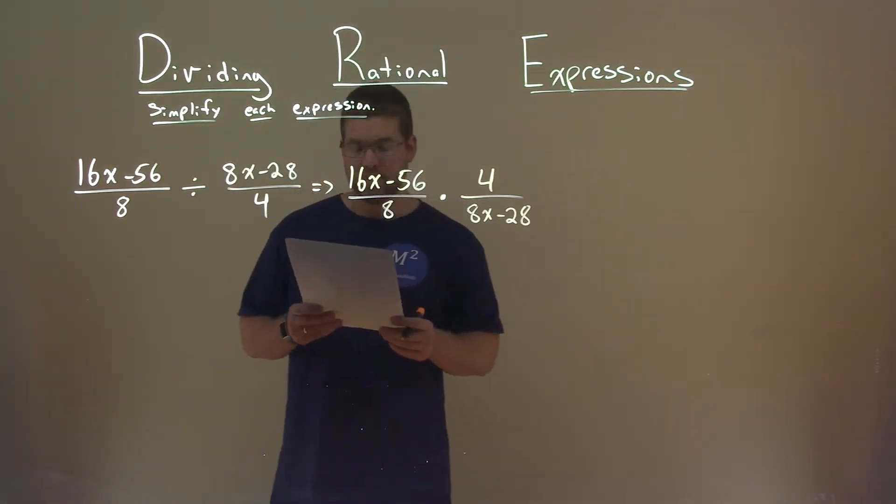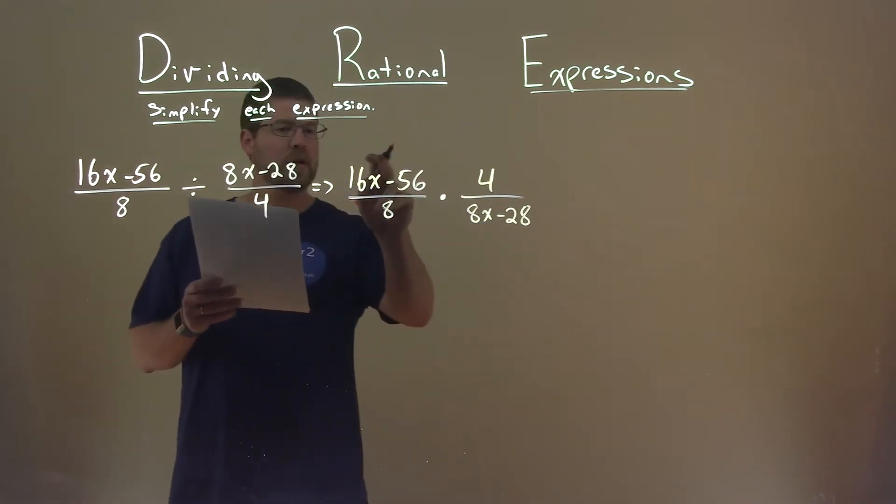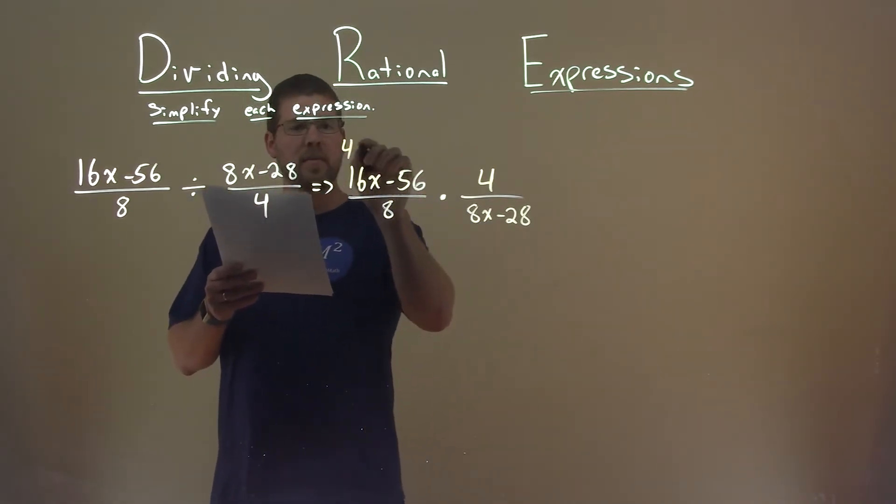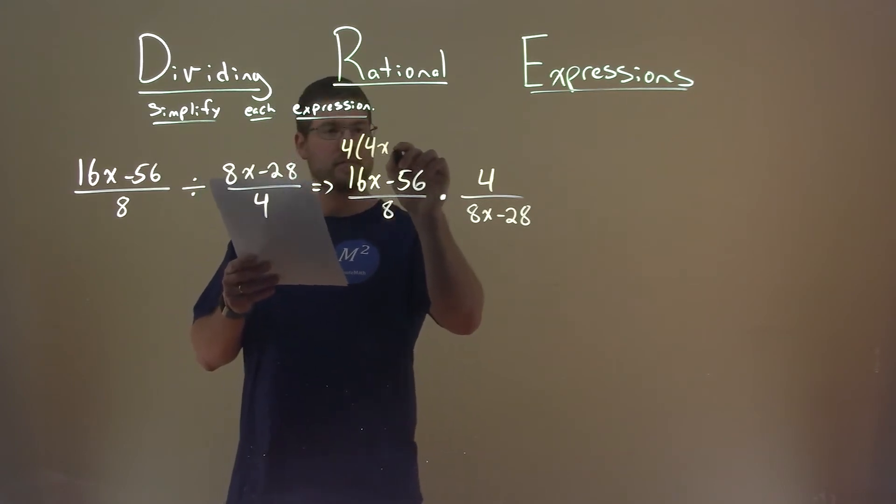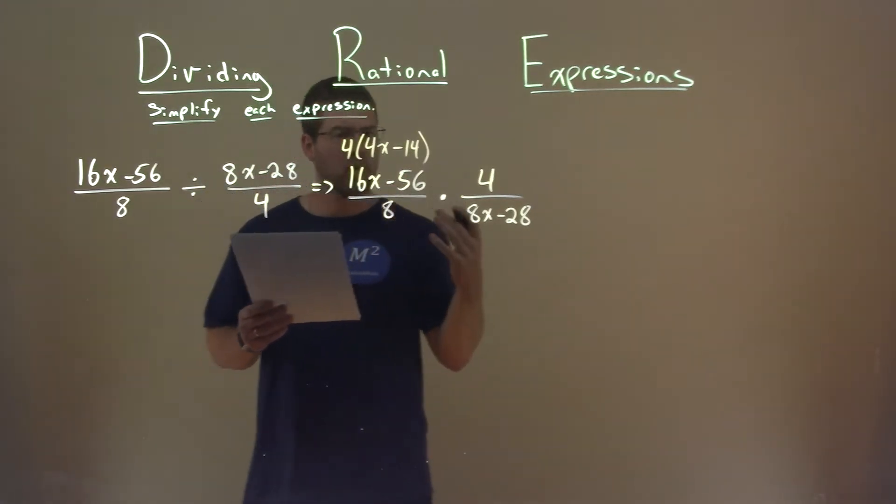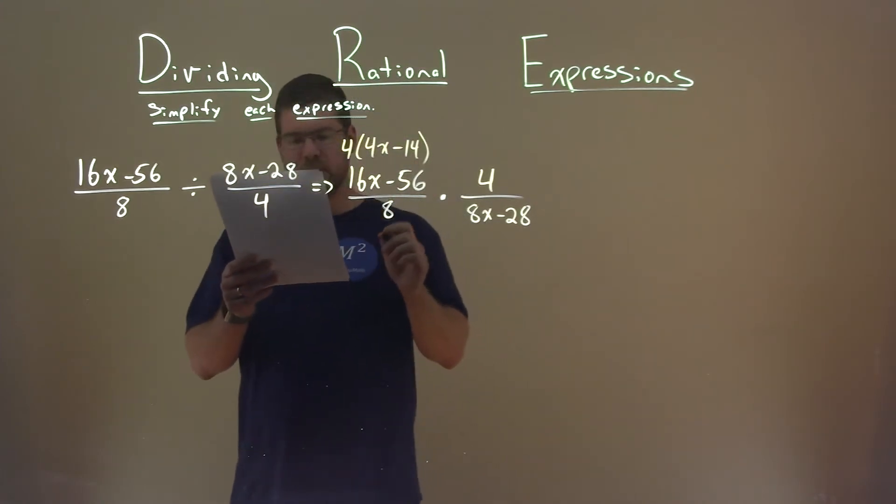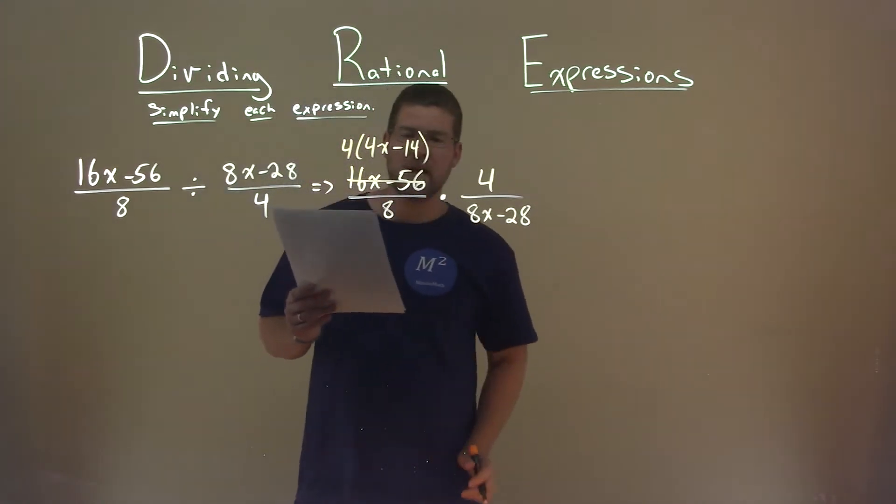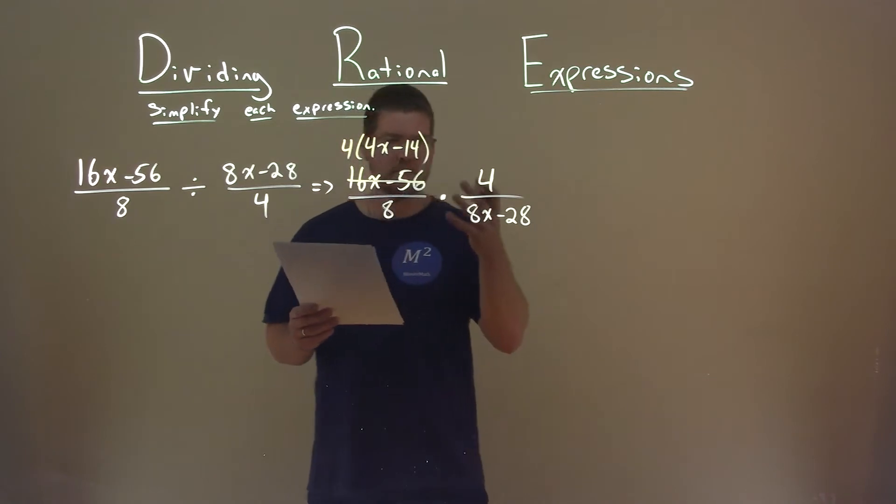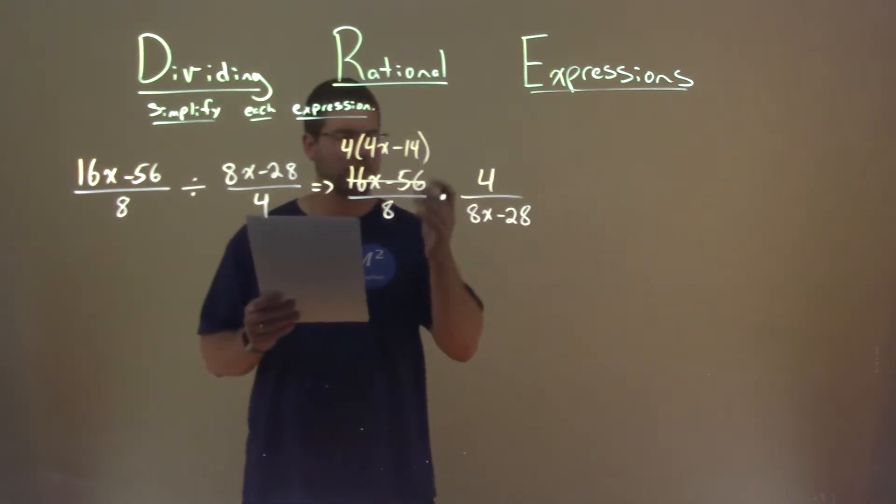Now let's see what we can factor. I can pull out a 4 here in the numerator, and I'm left with 4 times 4x minus 14. Notice I didn't factor it all the way, and you'll see why in a second. Replace 16x minus 56 with this factored form.